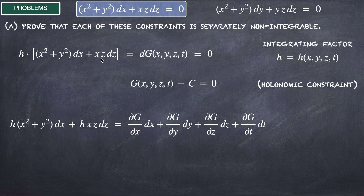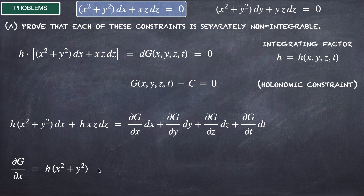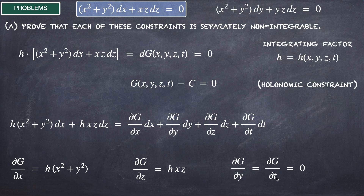On the right-hand side, let's write this as partial derivatives with respect to the variables of the function G of x, y, z, and t. So it will be del G del x dx plus del G del y dy plus del G del z dz plus del G del t dt. We recognize that del G del x is the coefficient multiplying dx, which is H times x squared plus y squared. Del G del z is H times xz. The other two partial derivatives, del G del y and del G del t, are equal to zero.